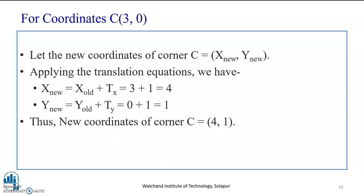Now, moving ahead for coordinate C of the square ABCD. Let the new coordinates of corner C be x-new, y-new. Applying the translation equation, we have x-new equal to x-old plus Tx, that is 3 plus 1, because x is 3 and translation distance is 1. So, we get 4. Y-new, that is y-old plus Ty, is equal to 0 plus 1, that is 1. Thus, the new coordinates of corner C is equal to (4, 1).